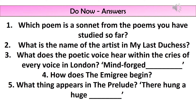Let's go through the answers. Number one, the poem that's a sonnet is Ozymandias. Number two, the name of the artist in My Last Duchess is Fra Pandolf. Number three, the thing that the poetic voice hears is mind-forged manacles — manacles are like handcuffs. Number four, the Emigree begins almost like a fairy tale: 'There once was a country.' And the final one, the thing that appears in the Prelude is: 'There hung a huge darkness.' Now give yourself a mark out of five and move on to the next slide when you're ready.